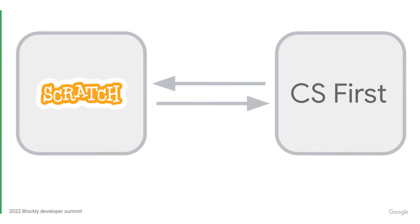Such as saving student projects. To work around this, we used the PostMessage API to communicate between Scratch for CS First and the main CS First app. On load, both sides negotiate a handshake and then use the PostMessage channel to communicate. Communication is bi-directional, and messages may optionally include a data payload.